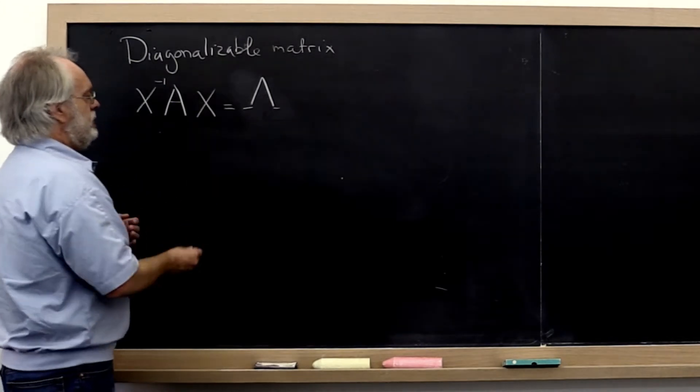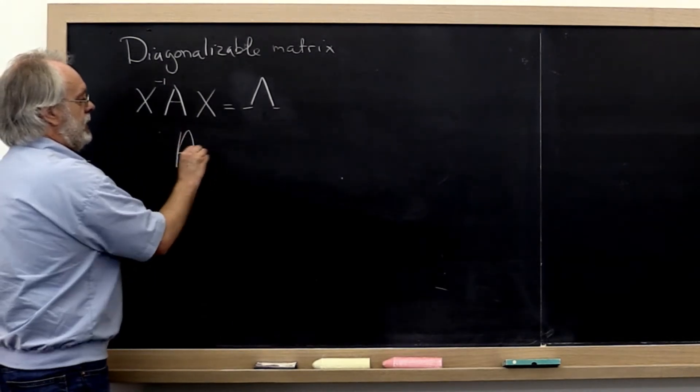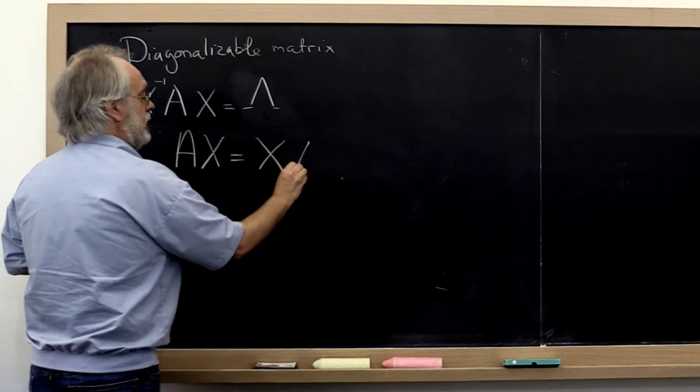We can rewrite this as A times X is equal to X times lambda.